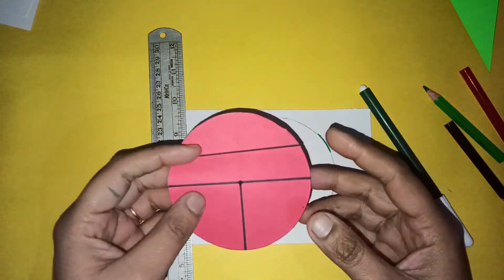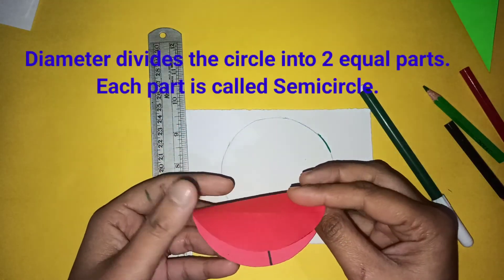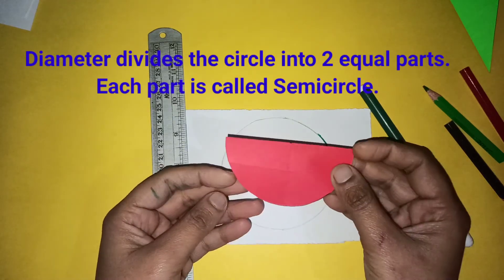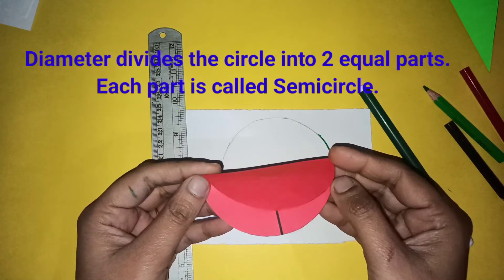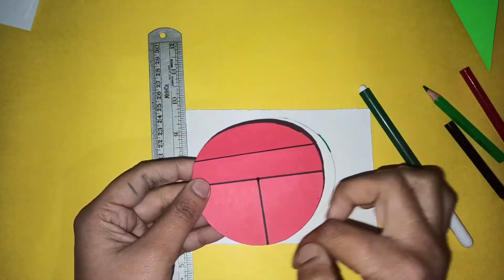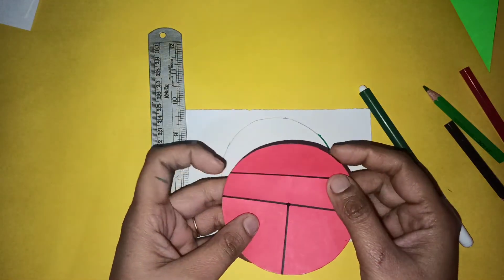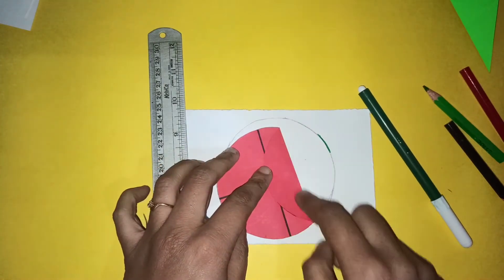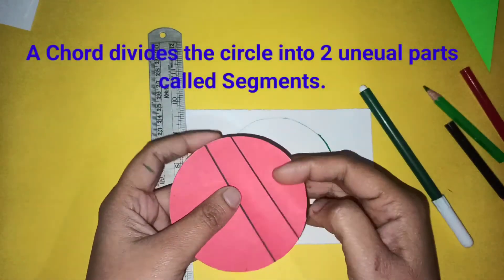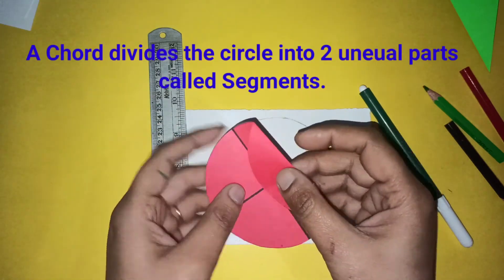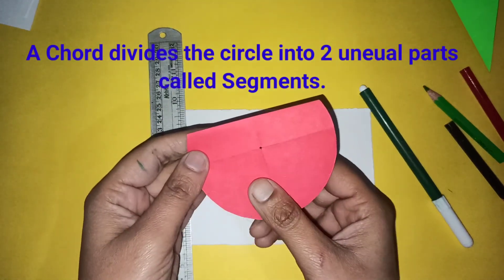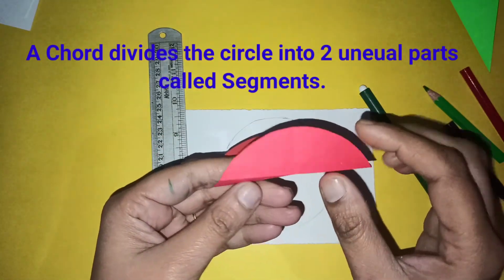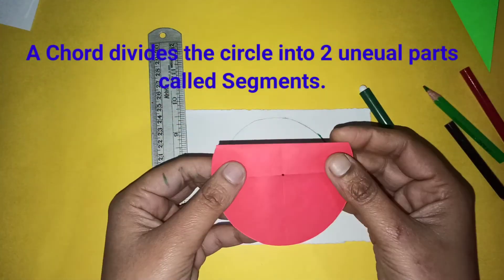Now let's talk about areas. Diameter divides the circle into two parts. The chord also divides the circle into two parts which are called segments. This is the major segment and this one is the minor segment.